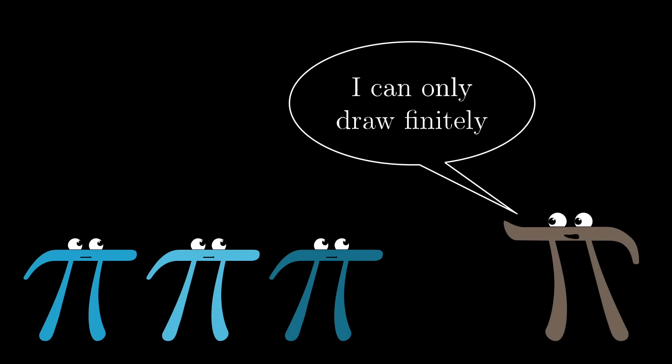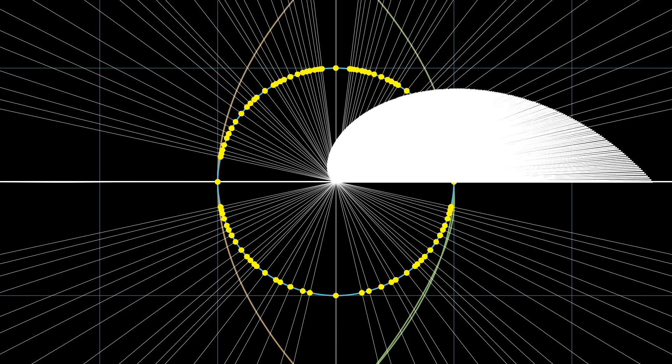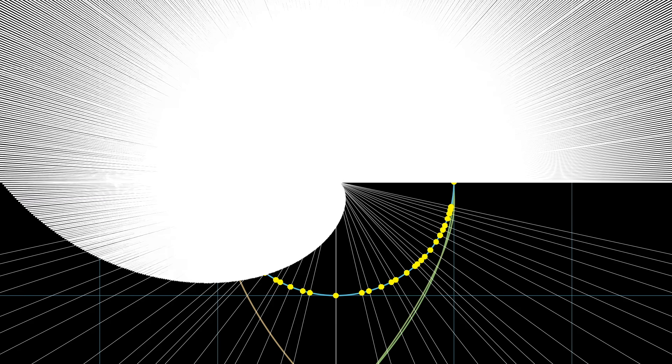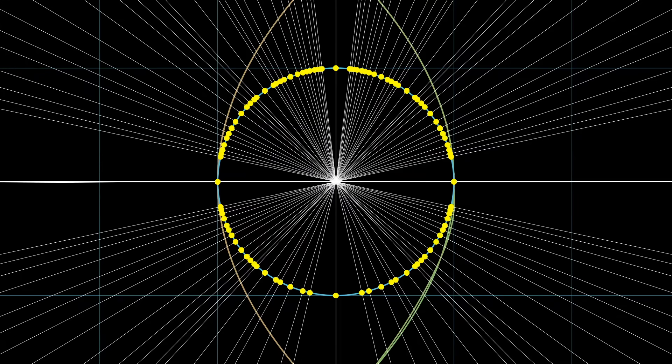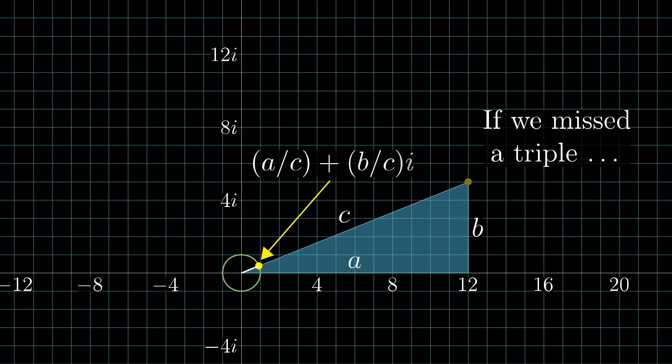And keep in mind, by the way, I'm drawing only finitely many of these dots and lines, but if I drew all infinitely many lines corresponding to every possible squared lattice point, it would actually fill every single pixel of the screen. Now, if our method was incomplete, if we were missing a Pythagorean triple out there somewhere, it would mean that there's some rational point on this circle that we never hit once we project everything onto the circle. And let me show you why that cannot happen.